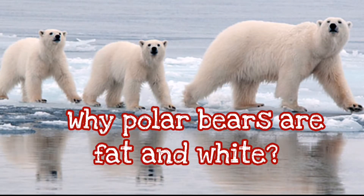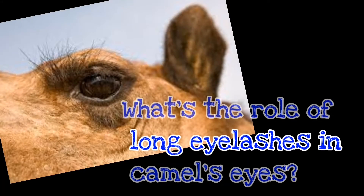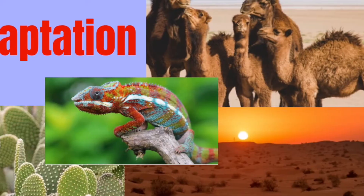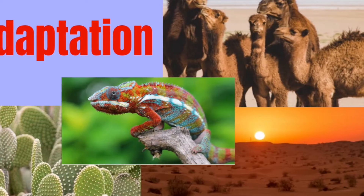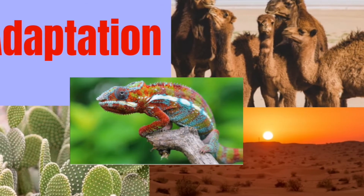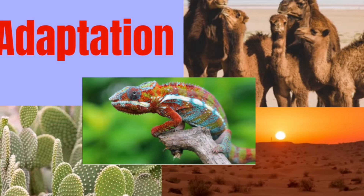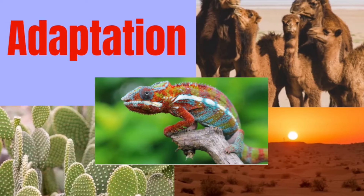Have you ever wondered where the polar bears are fat and white? What's the role of the long eyelashes in camels? Well, these questions will be answered in this video. Animals tend to survive in a particular environment because they have special characteristics to be successful in living these types of environments, and that is what we call adaptations.